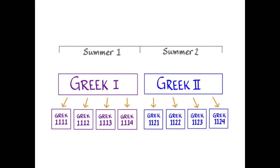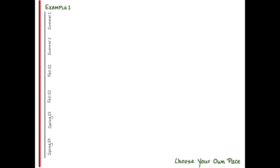For instance, say you wanted to get started in the summer but you wanted to go at a slower pace than the intensive five weeks for each half of the course.